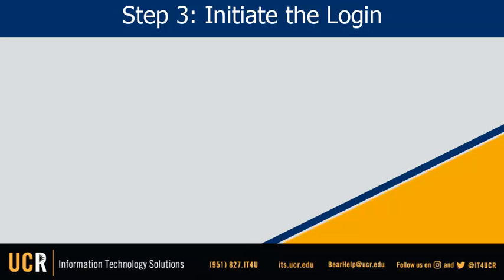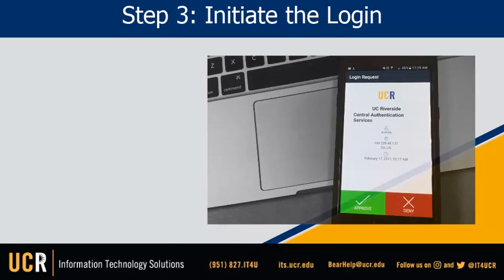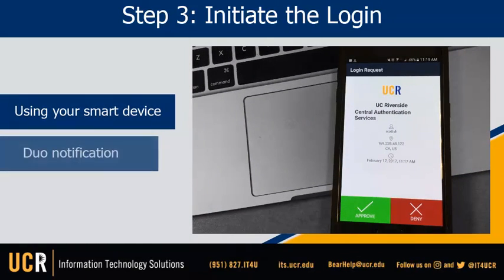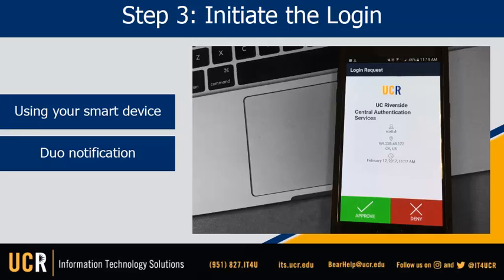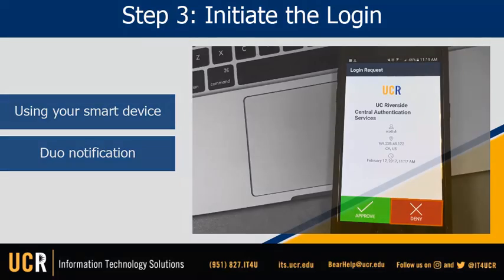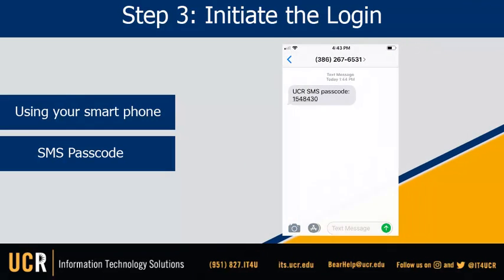Step 3: Initiate the login. If verifying from your smart device via the Duo application, you will tap a button to approve the request. If you receive a notification and you haven't logged in, you can deny the request and stop the login from taking place. The SMS passcode option will send a text message code to your phone, which is then typed into the passcode field on the central authentication screen.